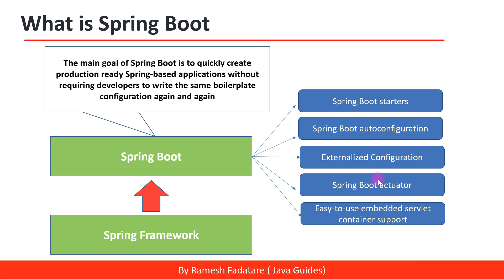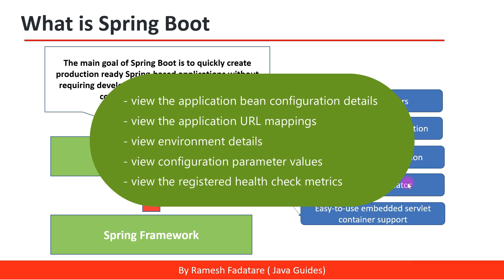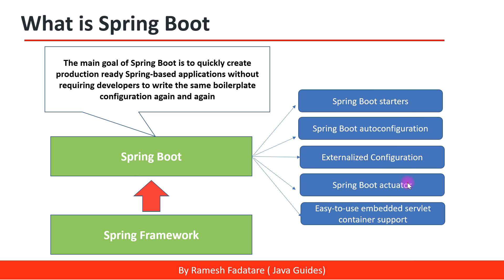The next Spring Boot key feature is Spring Boot Actuator — one of my favorite features. In our Spring Boot application we configure a lot of details, and we need to monitor them. Spring Boot Actuator provides many REST endpoints to view health checks and metrics. We can use Spring Actuator to view application bean configuration details, URL mappings, environment details, configuration parameter values, and registered health check metrics. It exposes many REST endpoints to monitor configuration, environment, URL mappings, and health checks.